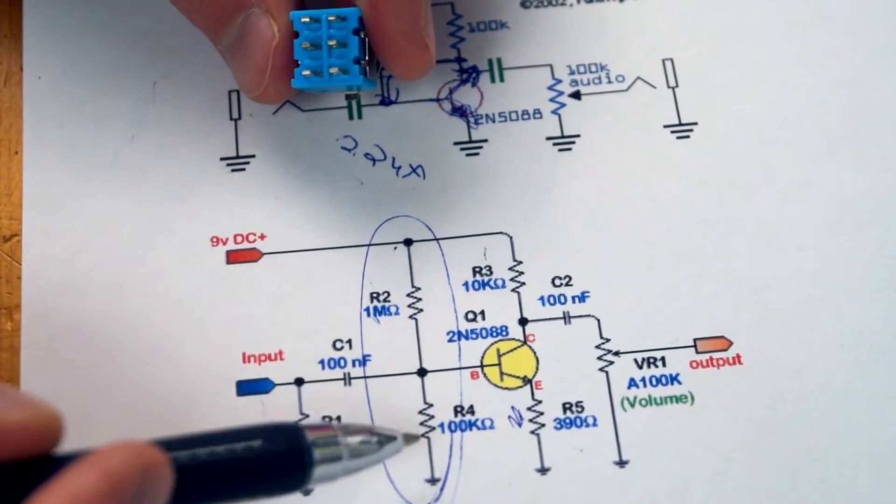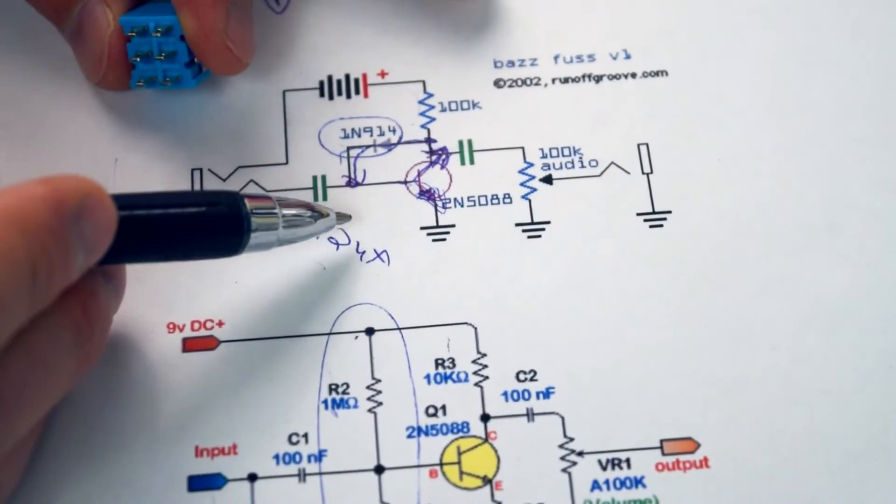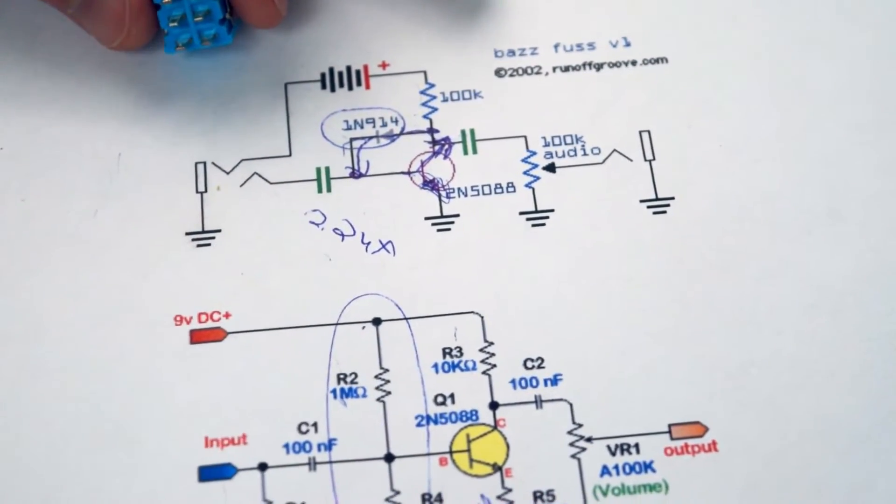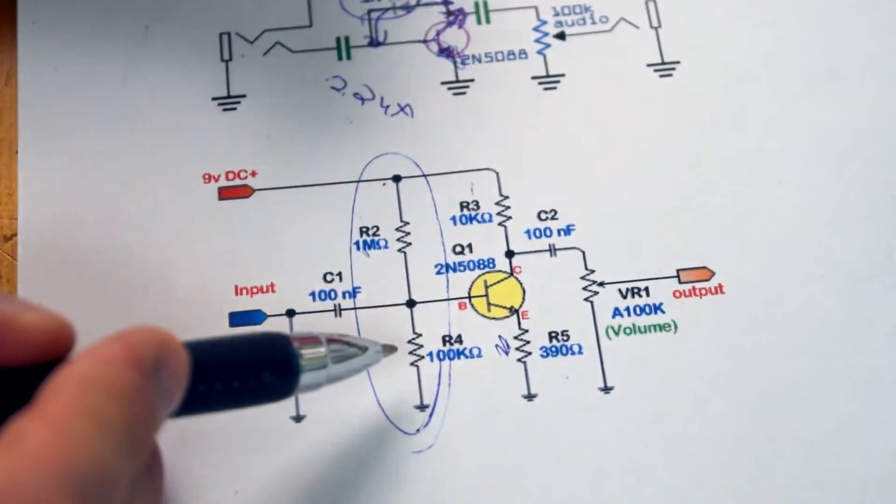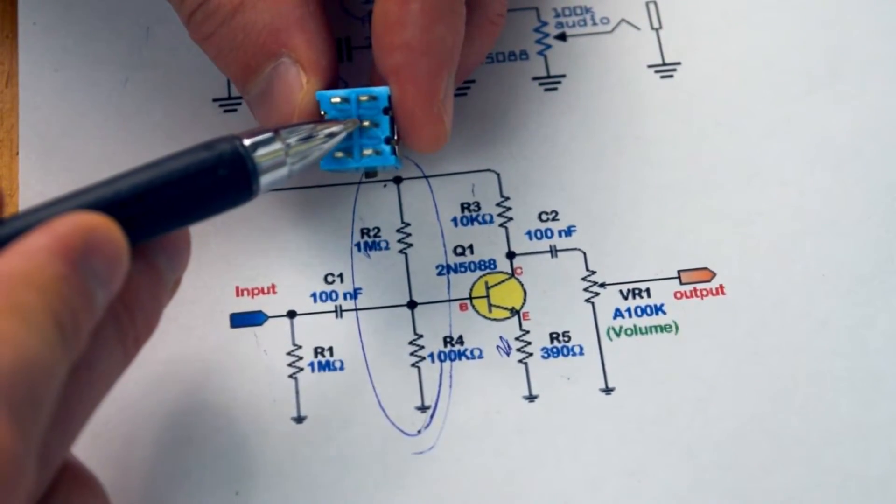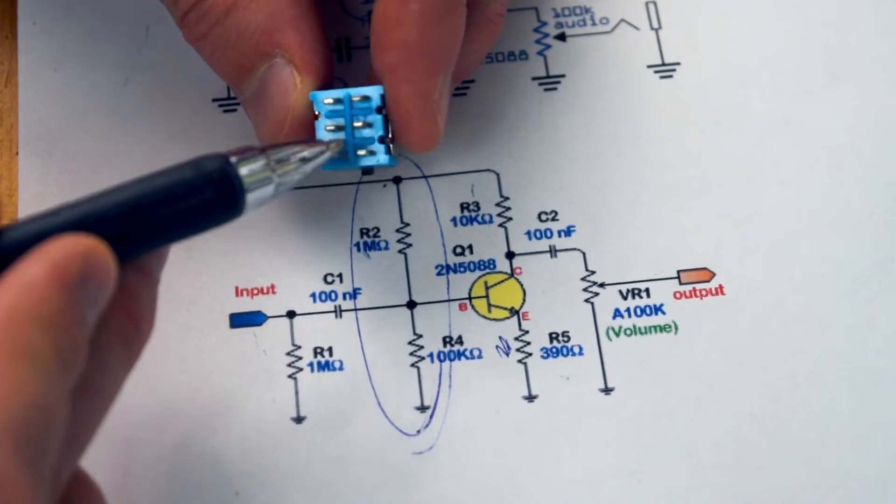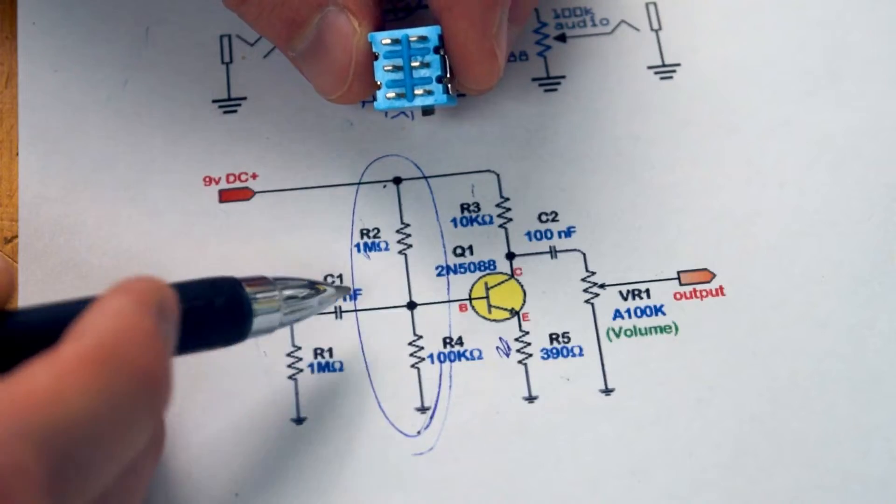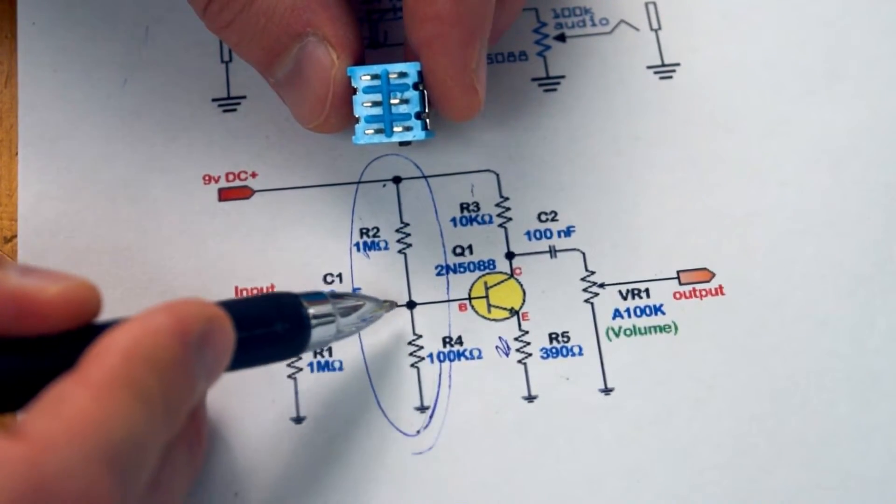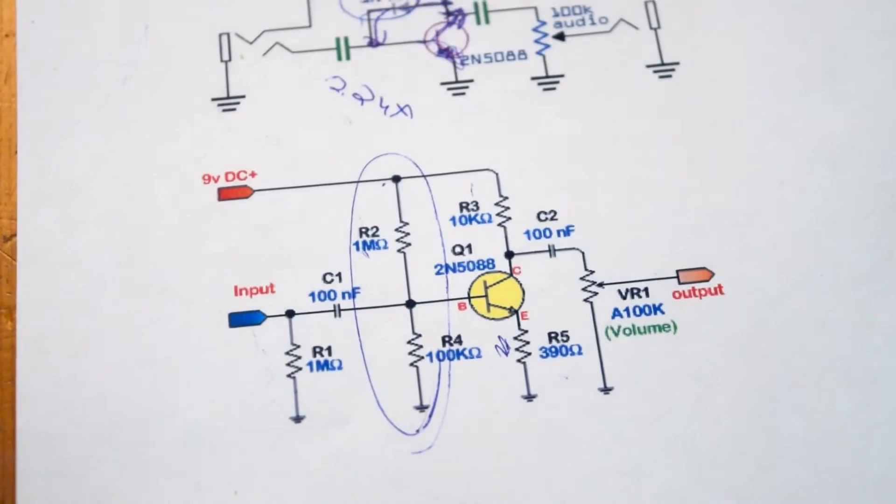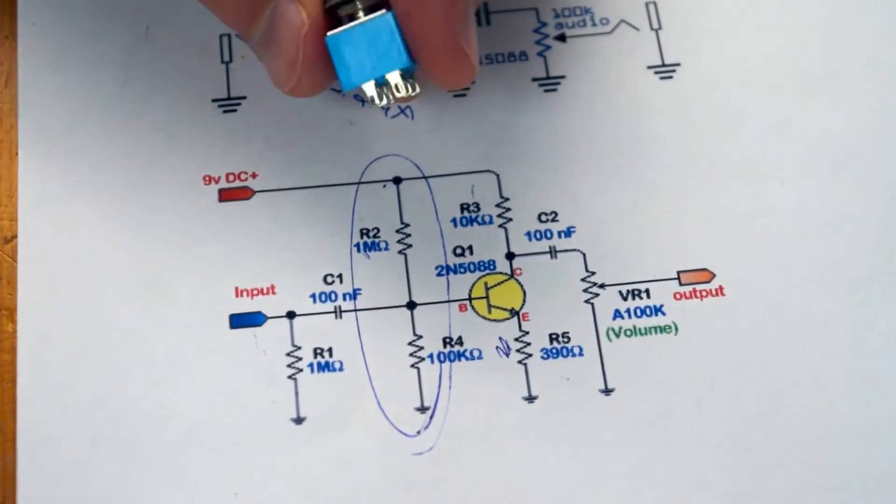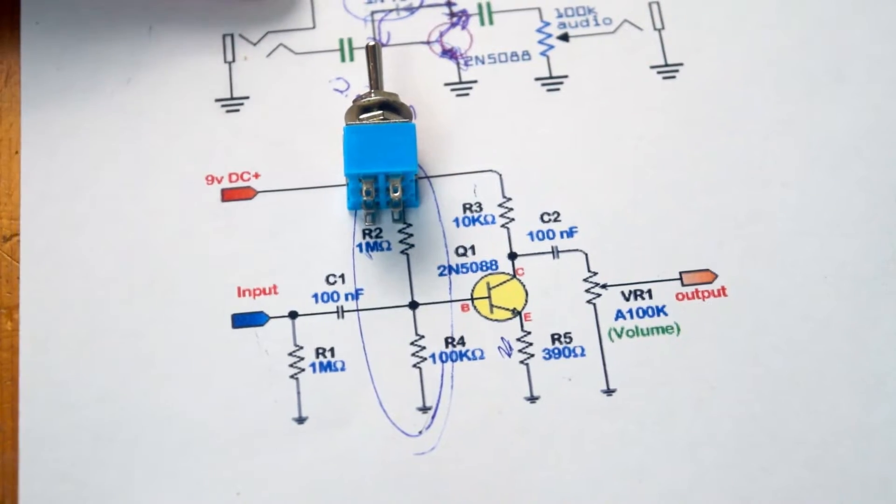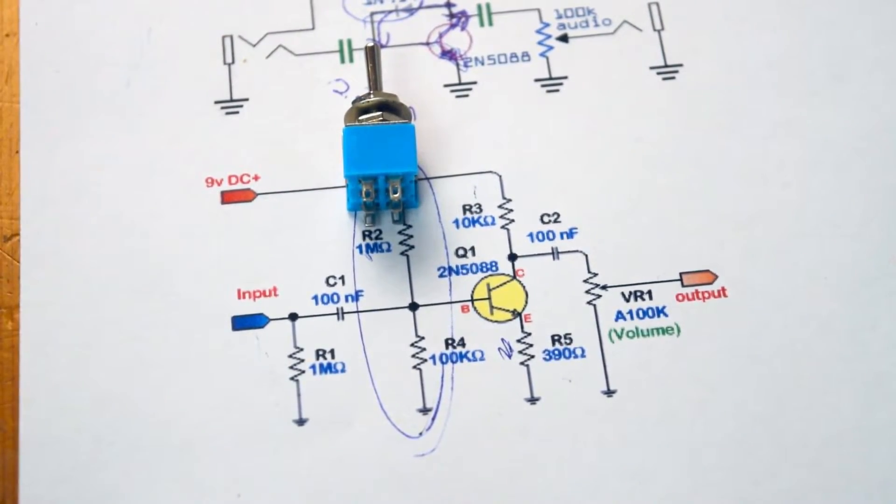I'm going to use the double throw, or double pull, because I need, on the Baz Fuss, you can see there's nothing here. Whereas in the boost circuit, what I'll have here is I'll have one side of the switch, the same side of the switch that's using this 1 meg resistor, I'm going to include this resistor here from base to ground. And then the other side will just be blank. So basically, this double pull, double throw switch will, on one side, give me Baz Fuss, and on the other side, give me LPB-1 booster.